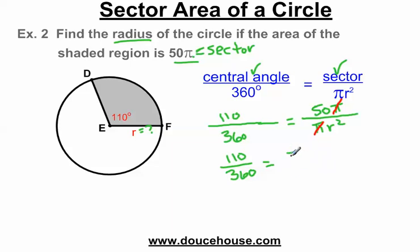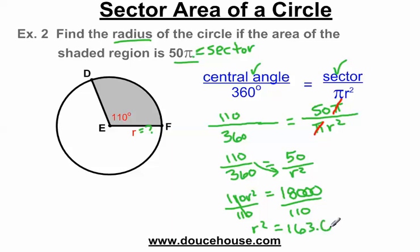We're going to cross multiply. 110 times r squared is 110 r squared. What's 360 times 50? I get 18,000. Now we need to get the r squared by itself. Divide both sides by 110. The radius squared is equal to, plugging in my calculator, I get 163.6, rounding this to the nearest tenth.